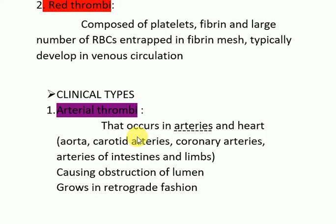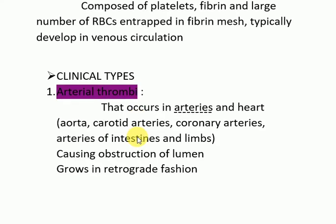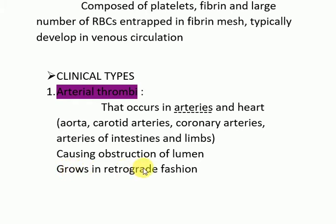In terms of clinical types, there are arterial thrombi, venous thrombi, and mural thrombi. Arterial thrombi occur in arteries and the heart — such as the aorta, carotid arteries, coronary arteries, arteries of the intestine and limbs. These thrombi cause obstruction of the lumen and always grow in a retrograde fashion, that is, in the opposite direction to the blood flow.